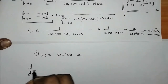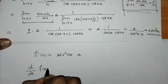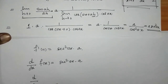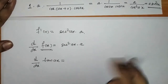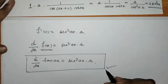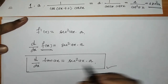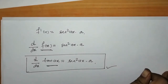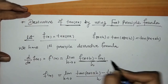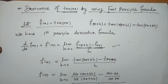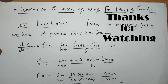We have found the derivative: f of x is tan of ax, and the derivative of tan of ax is a times sec squared ax. We have found the derivative of tan of ax using the first principle formula. Remember this formula and proceed in this way. That's it for now. See you in the next video. Thank you. Keep watching.